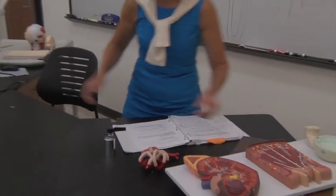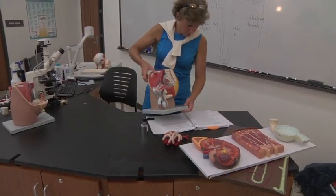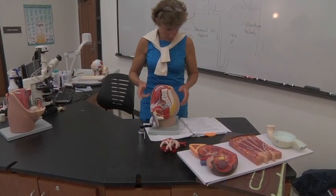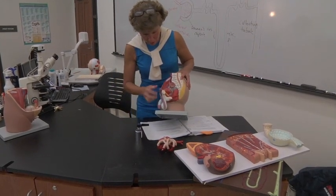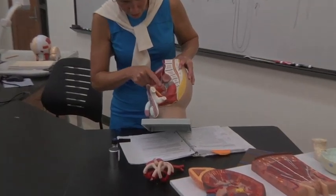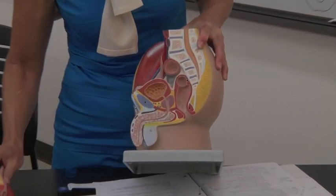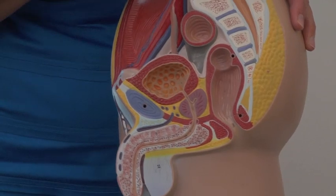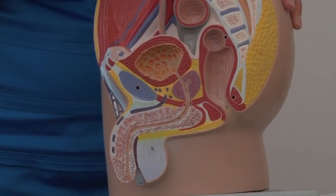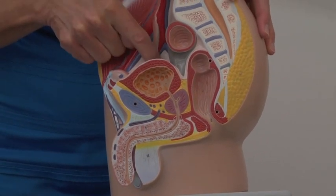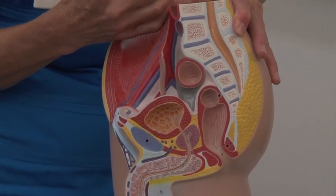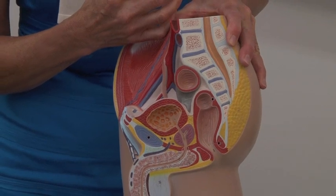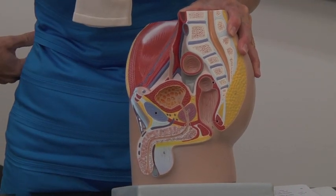The only other thing you need to know about the urinary system is you need to understand where the bladder, ureter, and urethra are, and where the internal and external urethral sphincters are. On the male, the bladder is right here. You've got to have a ureter, which comes from the kidney and goes down to the bladder. Your kidneys are located in the posterior side of your abdomen, right up under your ribs.